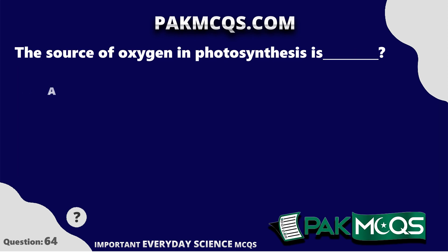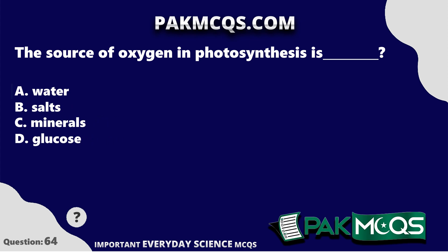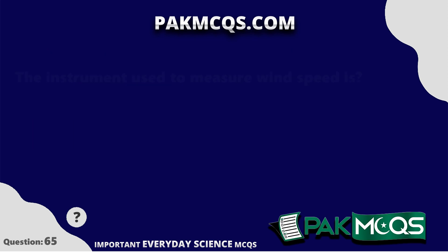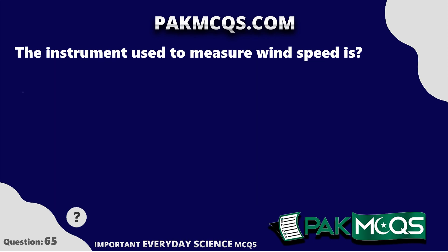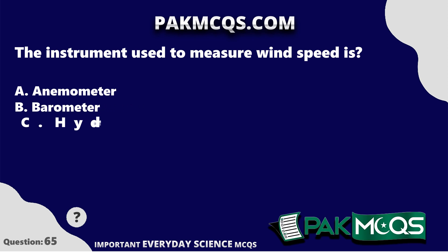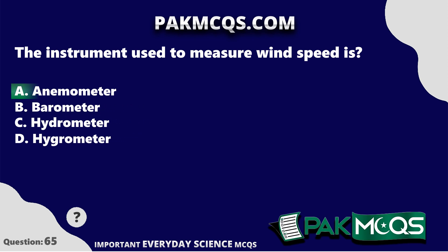The source of oxygen in photosynthesis is Water. The instrument used to measure wind speed is an Anemometer.